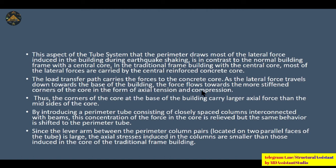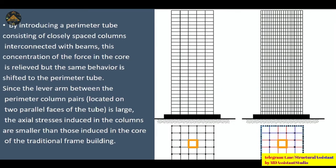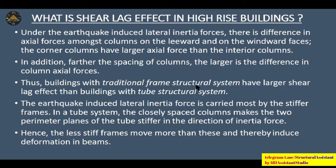The load transfer path carries forces to the concrete core; as forces travel down towards the base, they flow towards the corners of the core as axial tension and compression. By introducing a perimeter tube of closely spaced columns interconnected with beams, the concentration of force in the core is relieved and that behavior is shifted to the perimeter tube. As a result, the axial stresses induced in the columns are smaller than those induced in the corners of the core in a traditional frame building.